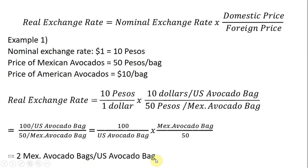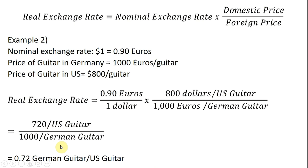In example 2, we look at the nominal exchange rate between the dollar and the euro. Let's say $1 will get you back 0.9 euros. In Germany, guitars sell for 1,000 euros; in the U.S., let's say $800. Plugging that information in: 0.9 euros per dollar multiplied by the domestic price divided by the foreign price.